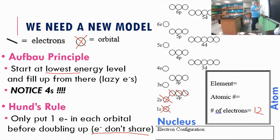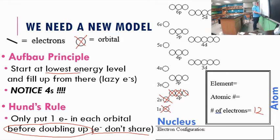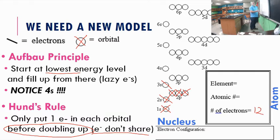Electron 7 also gets its own 2p orbital. Now all three 2p orbitals each have one electron, so we must start doubling up: electron 8 goes back into the first 2p orbital, electron 9 into the second, and electron 10 fills the third. The 2p level is now completely full. Electron 11 goes to 3s, and electron 12 joins it there.